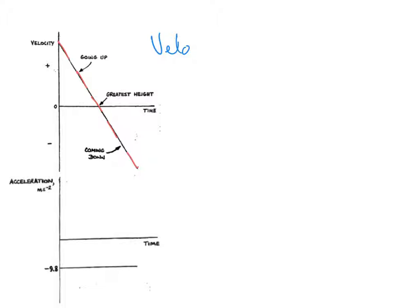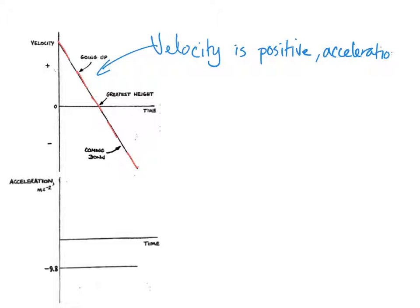Now that often causes a bit of confusion. On the way up, the velocity is positive — our standard convention is up as positive, so going up the velocity is positive. The acceleration is negative, and because these are both acting against each other the ball slows down — the value of the velocity is getting closer to zero. It's positive, it's decreasing, it's getting closer to zero.